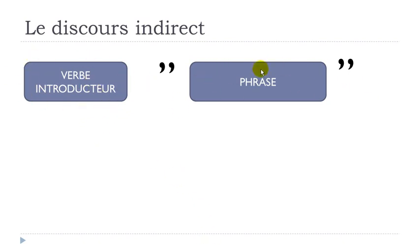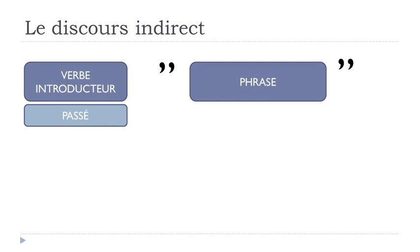However, if the first part — the verb introducteur — is at the passé (past), then the rest of the structure will have to be modified. When I write 'past' it could be imparfait, passé composé, passé simple — all the past tenses. If this first verb is at the past, then the rest of the sentence will have to be modified when you put it into the discours indirect. That's what we'll see in this video.